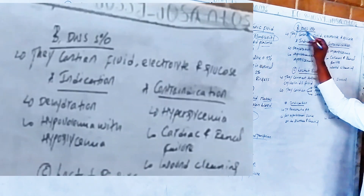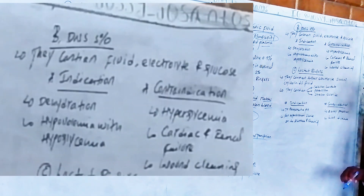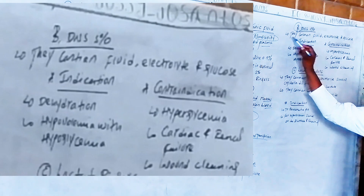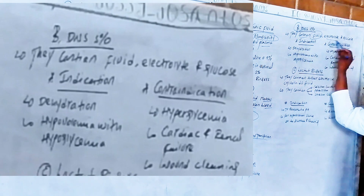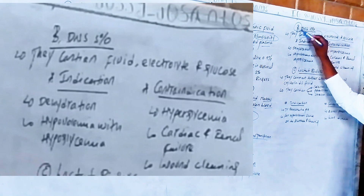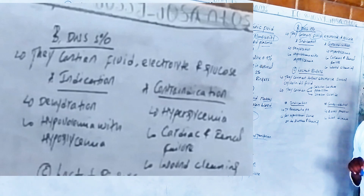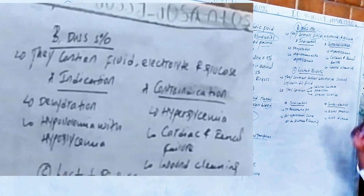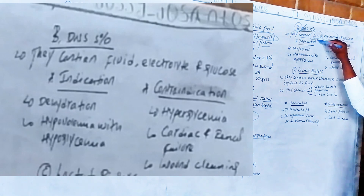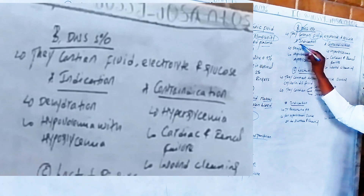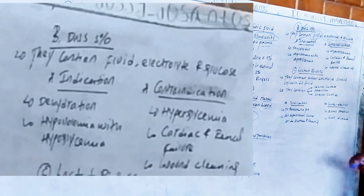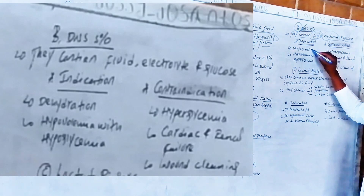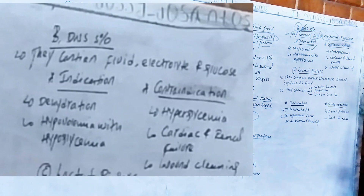The next fluid is dextrose in normal saline (D5NS). It contains fluid, electrolytes, and glucose. Dextrose is essentially glucose. Dextrose in normal saline is a different kind of isotonic fluid. The indications for D5NS include dehydration secondary to fluid loss and hypoglycemia.